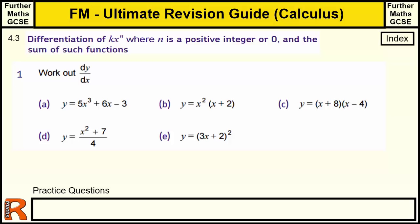4.3: Differentiation of kx to the n, where n is a positive integer or 0, and the sum of such functions. This is part of the Calculus section of the Ultimate Revision Guide for Further Maths GCSE.